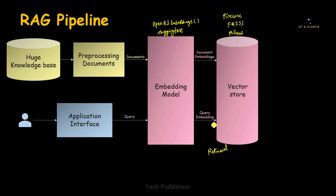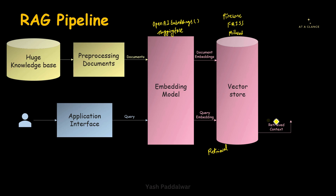This query embedding will then be sent to the vector store for searching. We will search for the most similar documents through this query embedding, and those most similar documents will be called the top relevant documents — given as an output from the vector store. This is called retrieved context. The top relevant documents that we are getting from the query we raised in the vector store is called retrieved context.